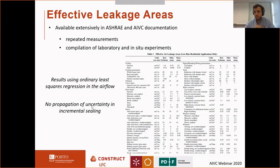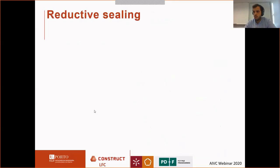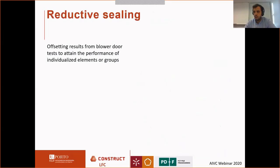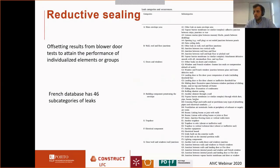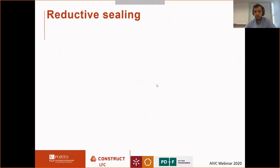The reductive sealing technique is an offsetting of results from a blower door test to attain performance of individualized elements or groups. For example, the French database has 46 subcategories of leaks.